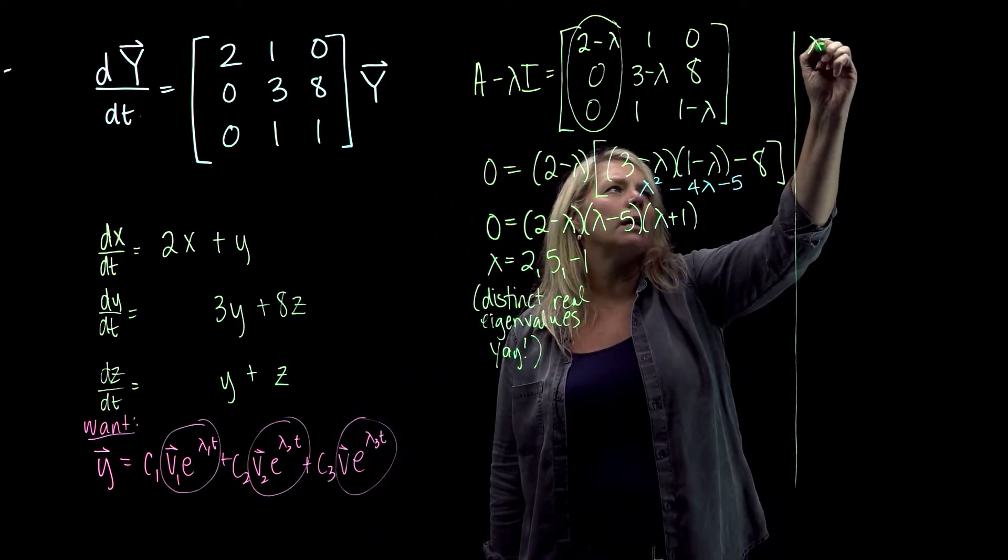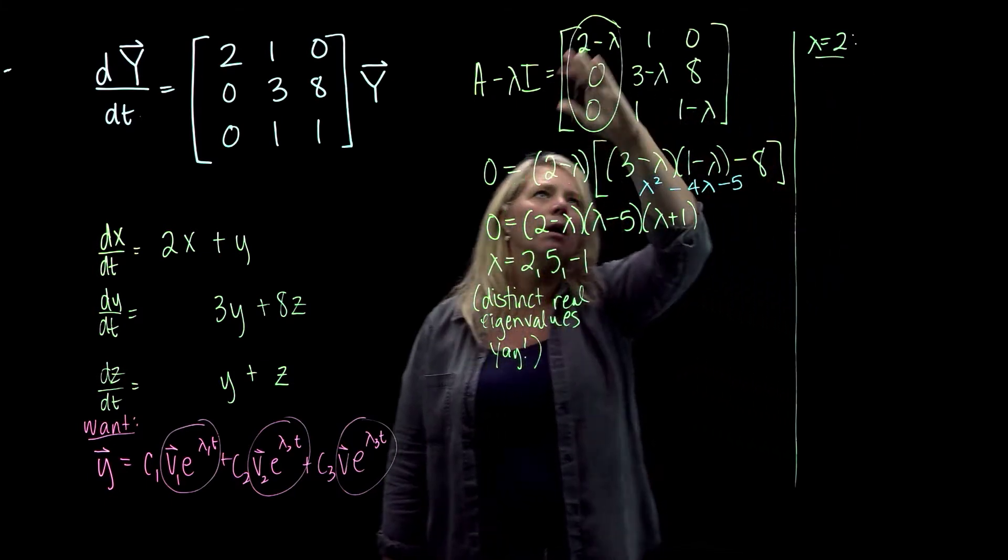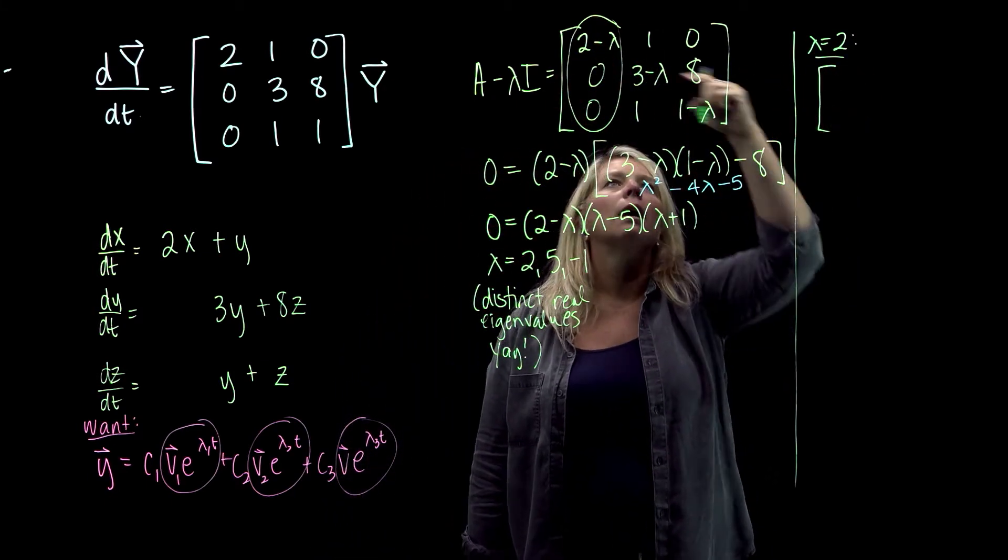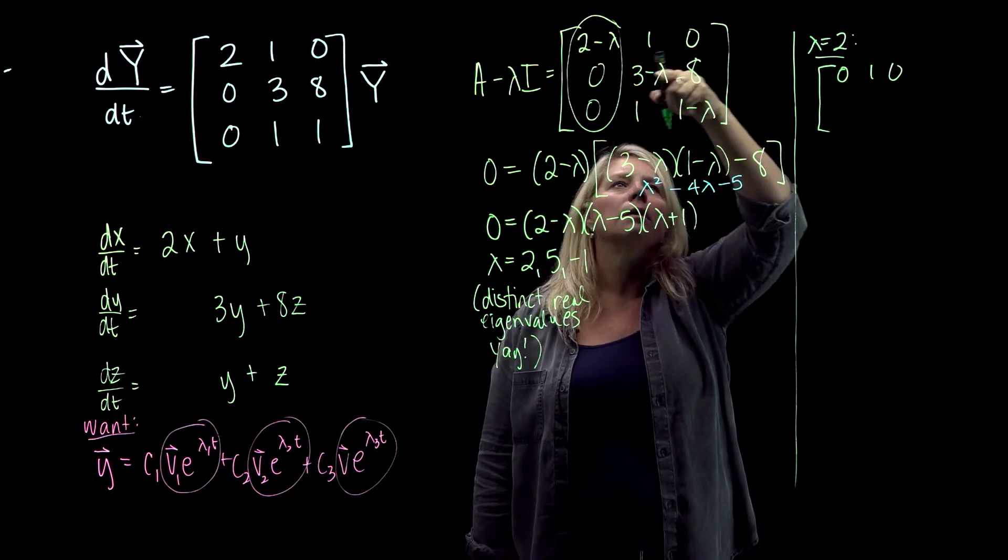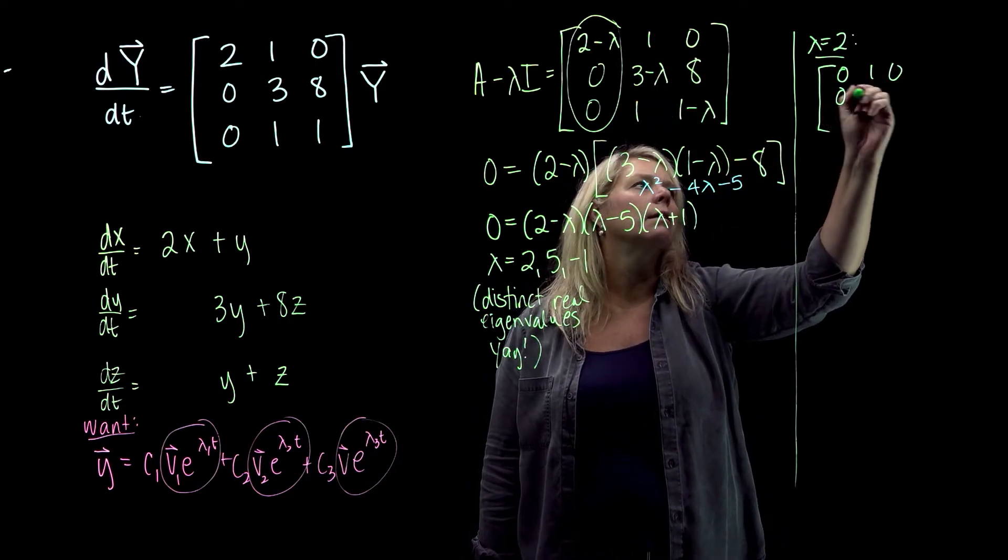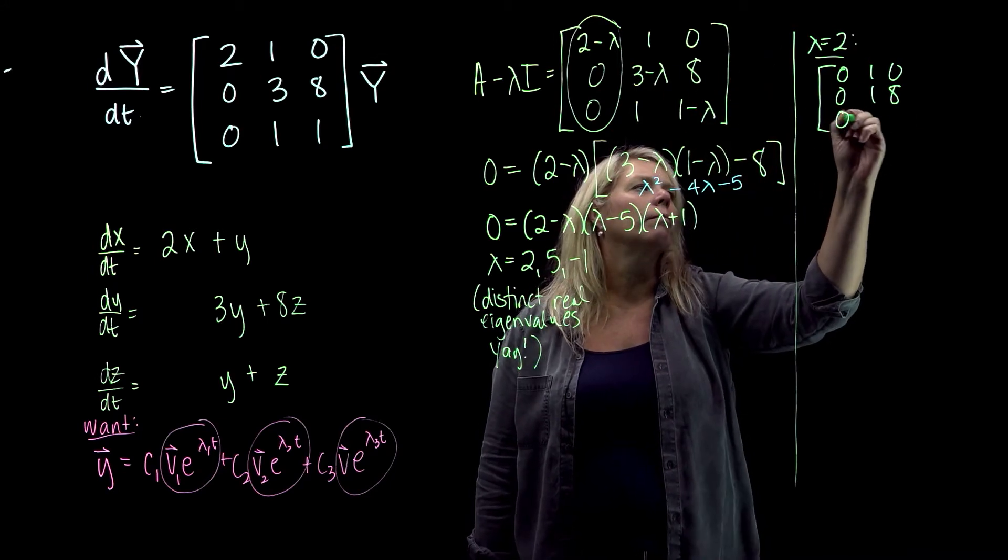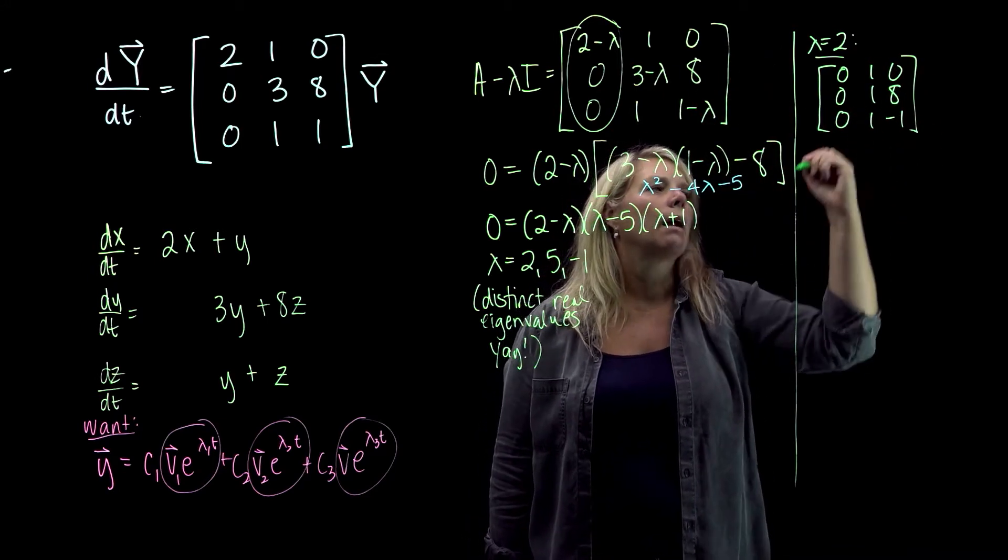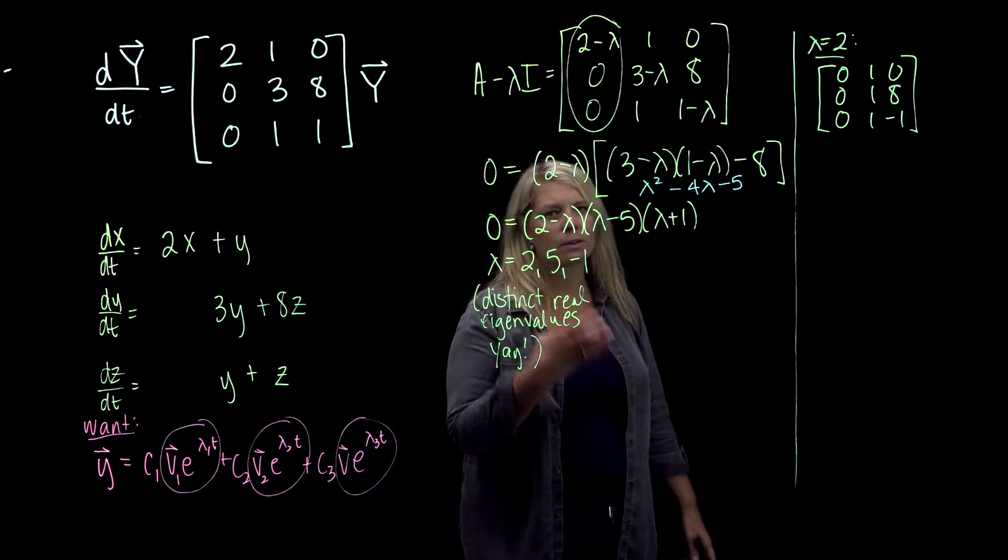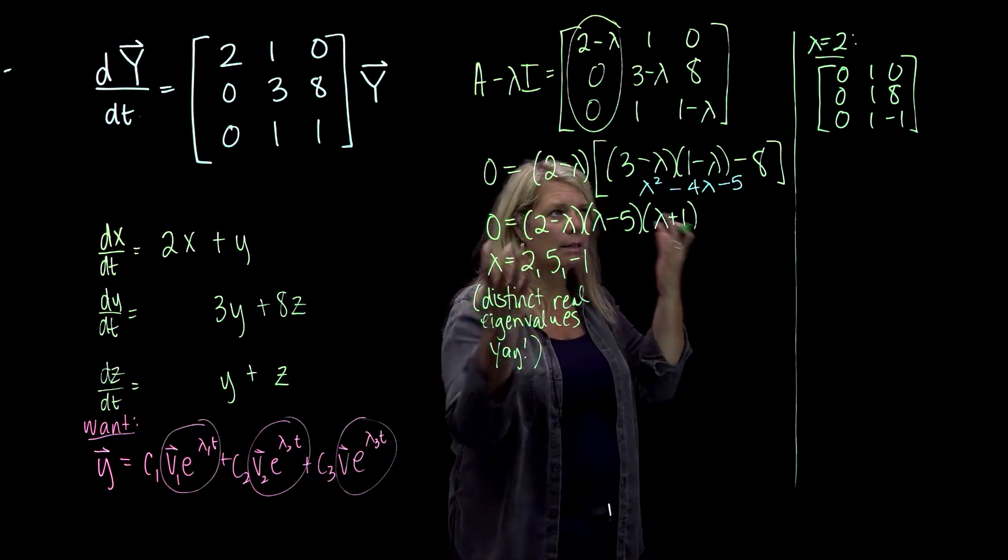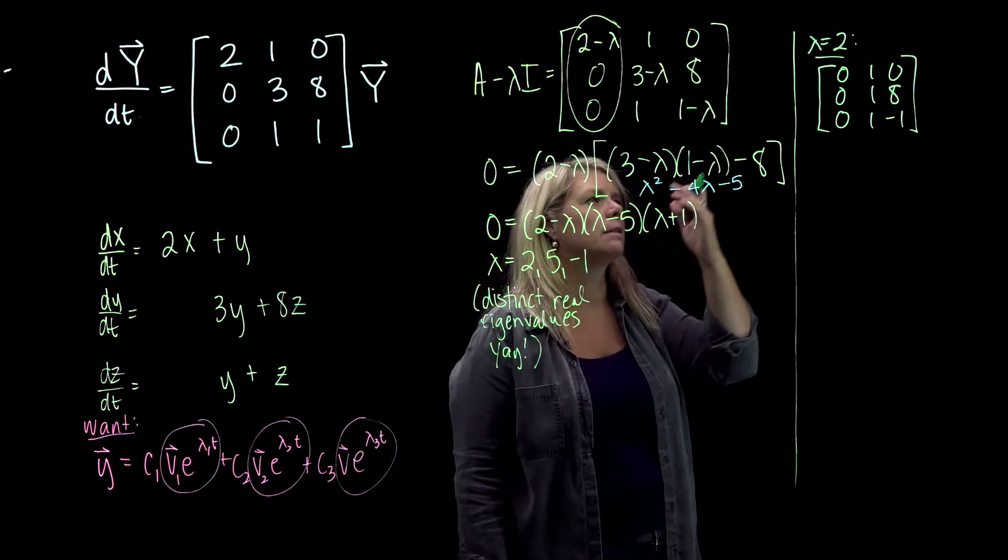Alright, so for lambda equals 2, when I put lambda equals 2 in here, I will get [0, 1, 0; 0, 1, 8; 0, 1, -1]. And what I'm looking for is a basis for the null space of this matrix. So you can think about essentially you've got a system of equations here. And so maybe you want to use RREF on your calculator, or maybe it's simple enough that you can just solve this one by hand.